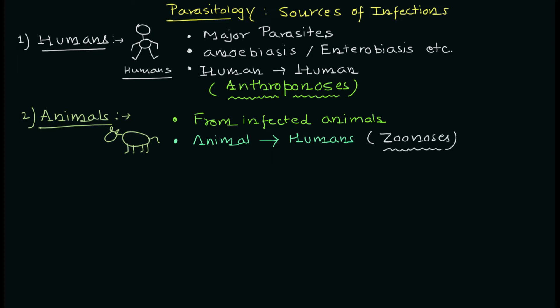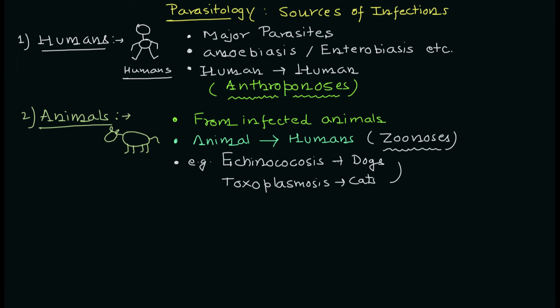Let's take the example of dogs and cats. Dogs can become a source of infection for an important disease — Echinococcus granulosus is the causative organism and the disease is echinococcosis. Toxoplasmosis is another disease where cats are the source of infection. They are pets, so you need to be very careful — they must be thoroughly cleaned if you are handling them and they are close to your food sources.